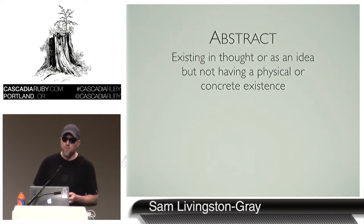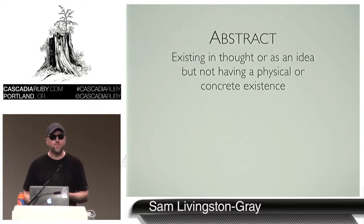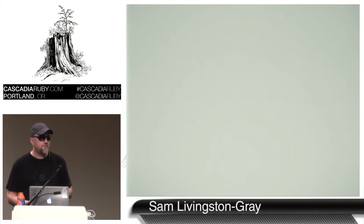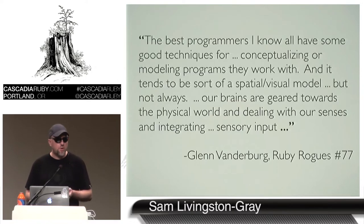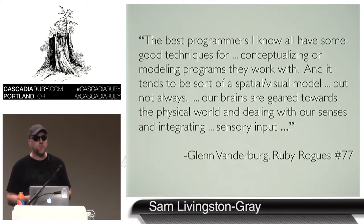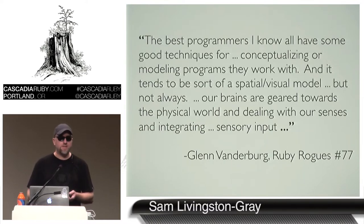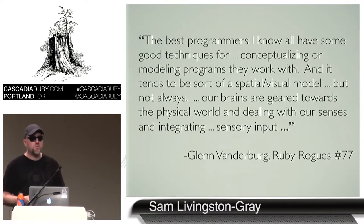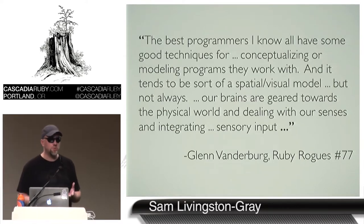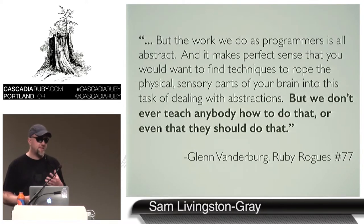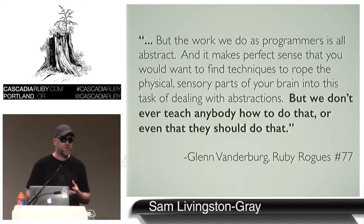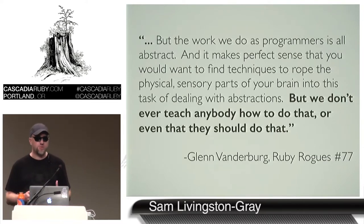Abstract things are hard for us to think about precisely because they don't have a physical or concrete existence. I got the idea for this talk when I was listening to the Ruby Rogues podcast episode with Glenn Vanderberg. Basically what he said was: the best programmers I know all have some good techniques for conceptualizing or modeling programs. It tends to be a spatial or visual model, but not always. Our brains are geared towards the physical world, but the work we do as programmers is all abstract. And it makes perfect sense to rope the physical sensory parts of your brain into dealing with abstractions, but we don't ever teach anybody how to do that.